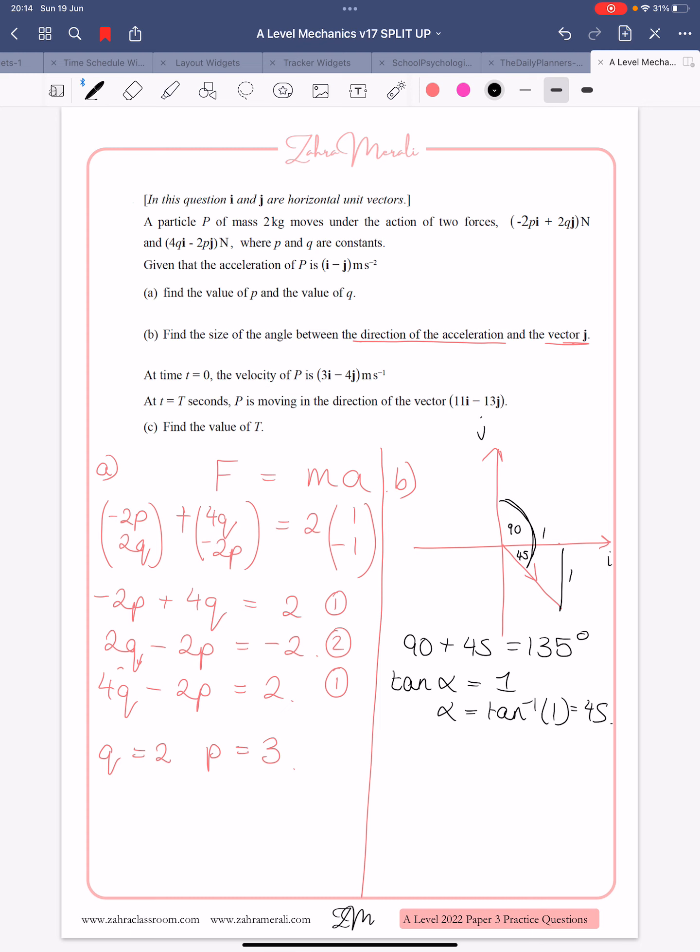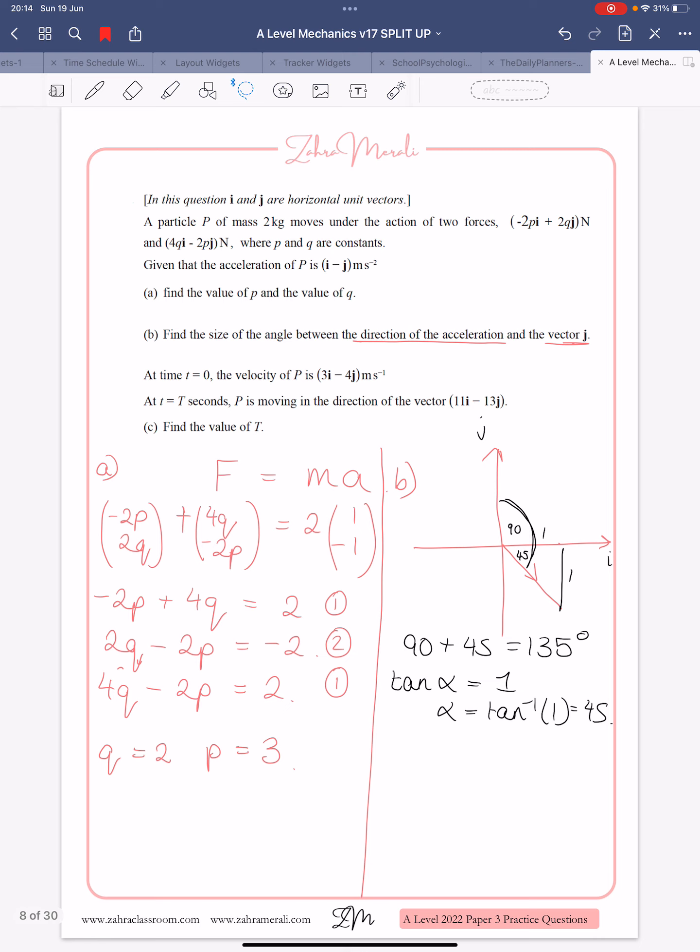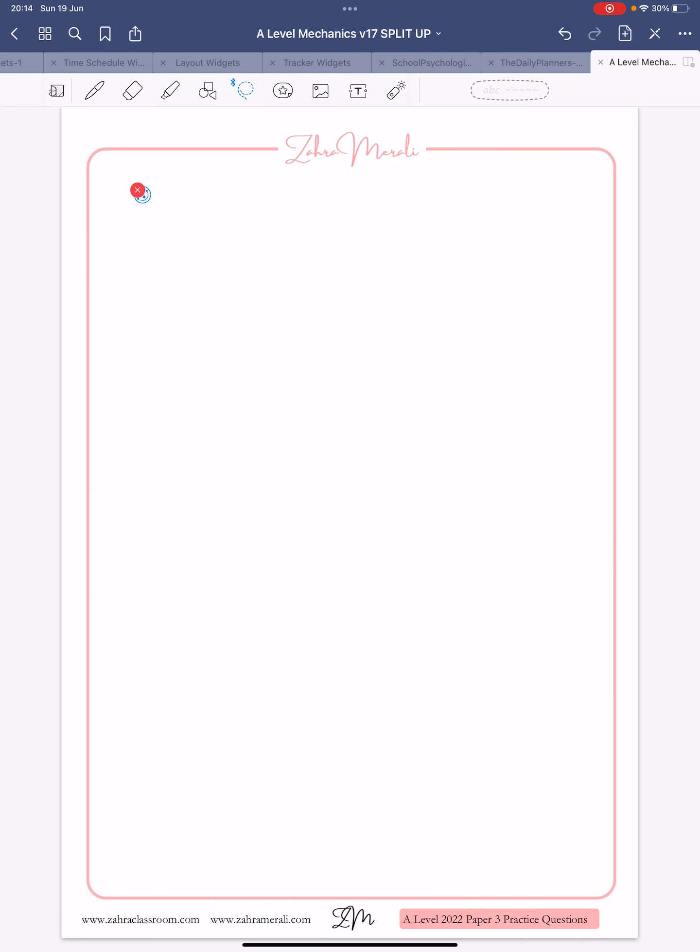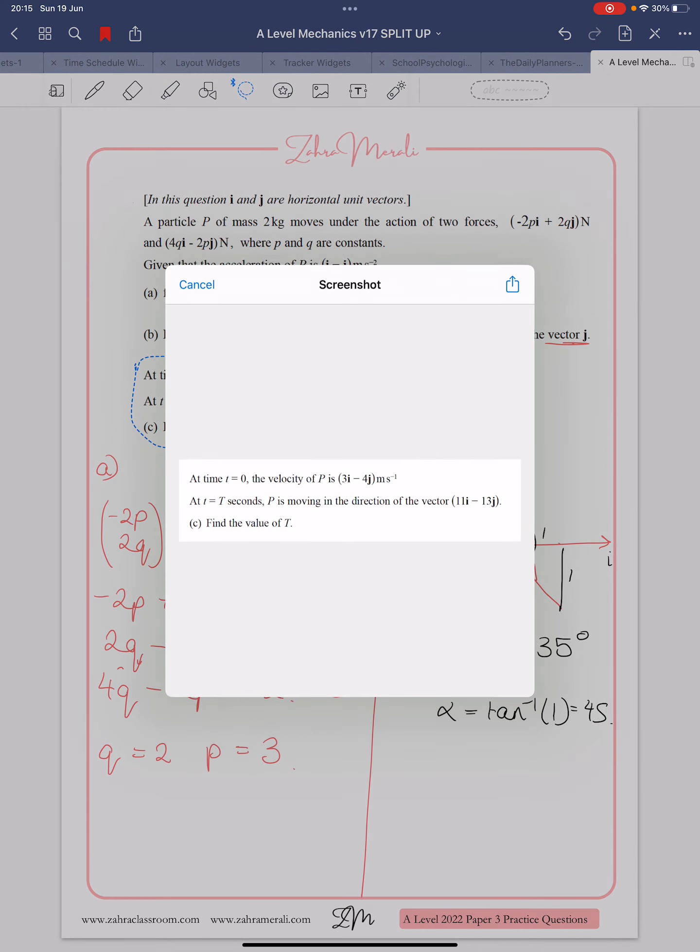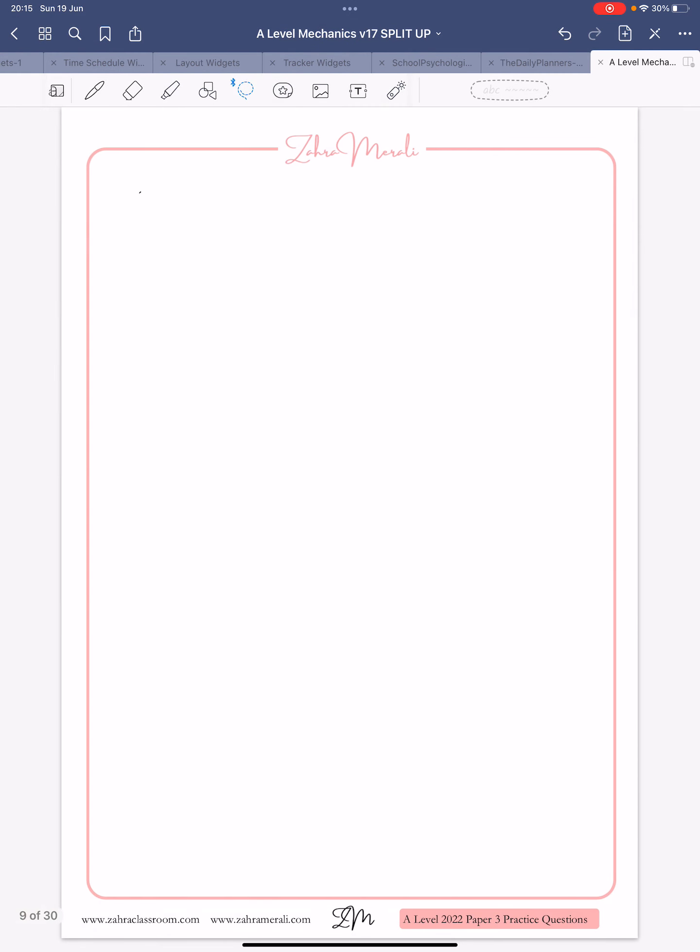OK, so for part C, at time T equals 0, we're given a velocity, and it's moving in the direction of a different vector.